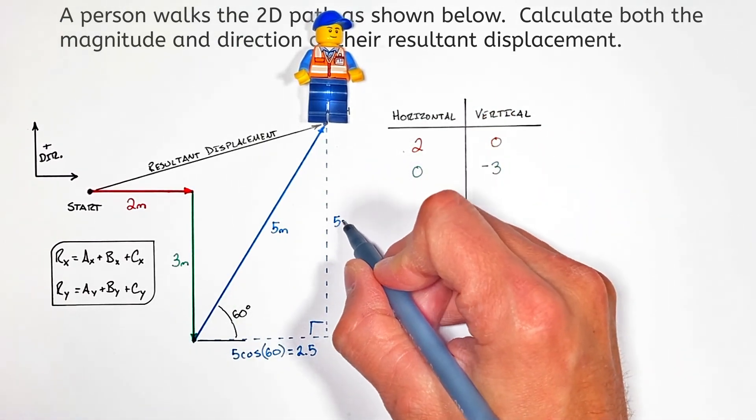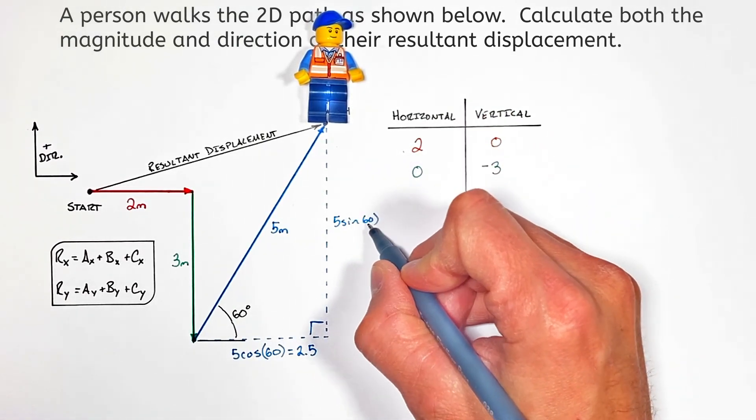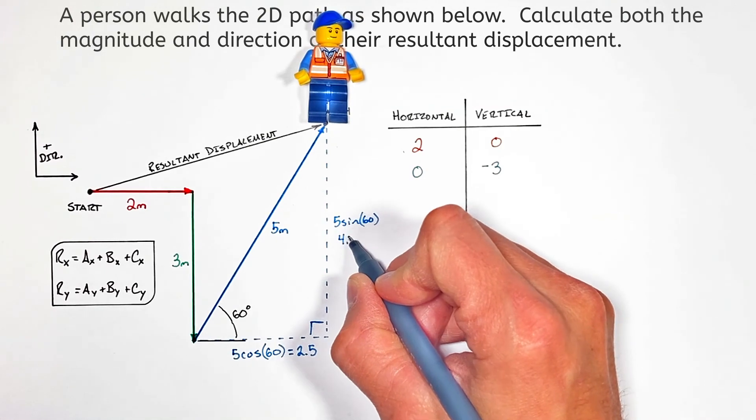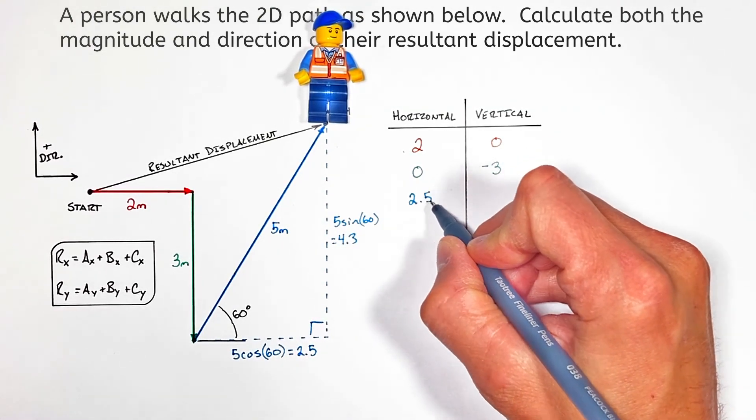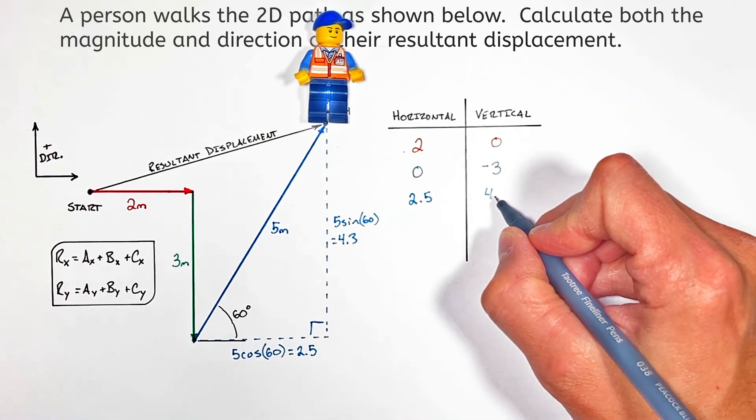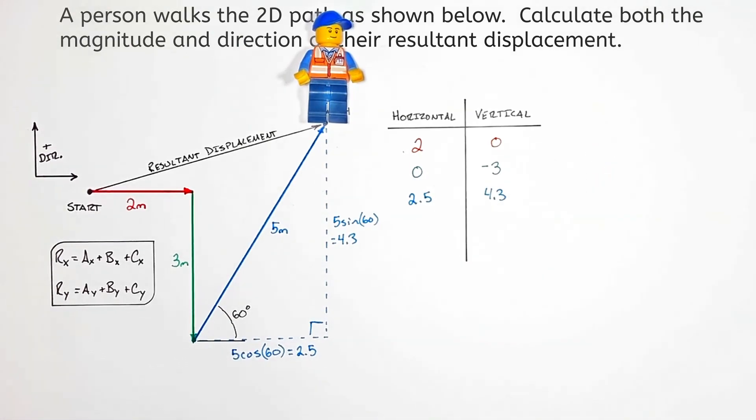The vertical side has a length of 5 sine 60, which works out to be 4.3. So on our data table we're going to put in a horizontal component of 2.5 and a vertical component of 4.3.